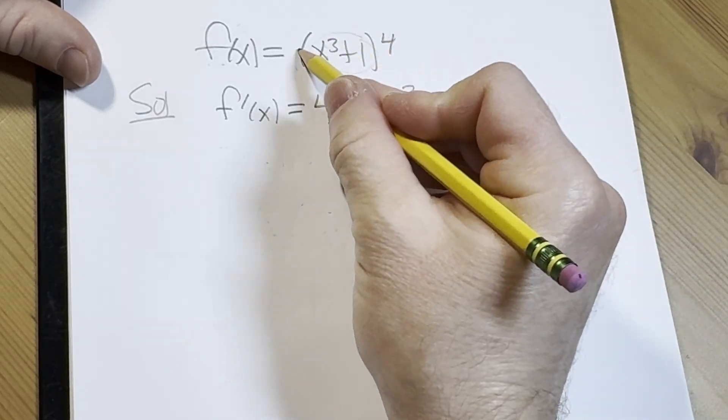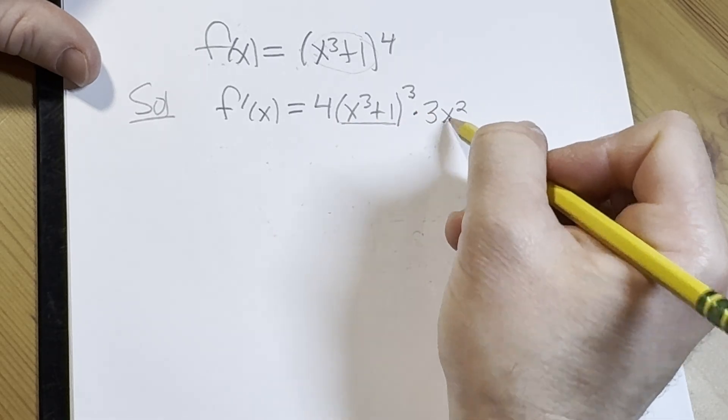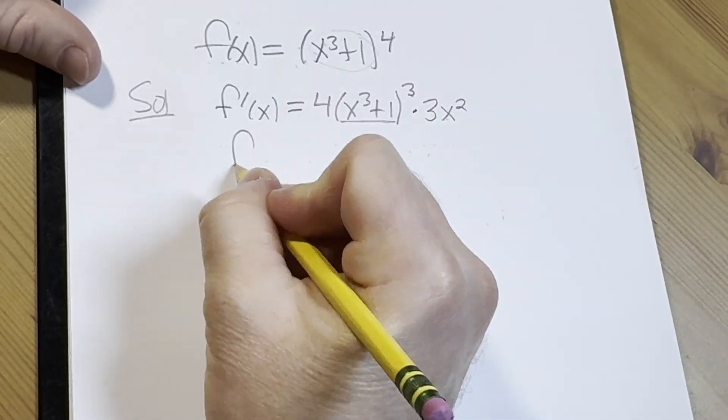So we're going to bring down that 4, subtract 1 from the exponent, and then multiply by the derivative of the inside, which is 3x².